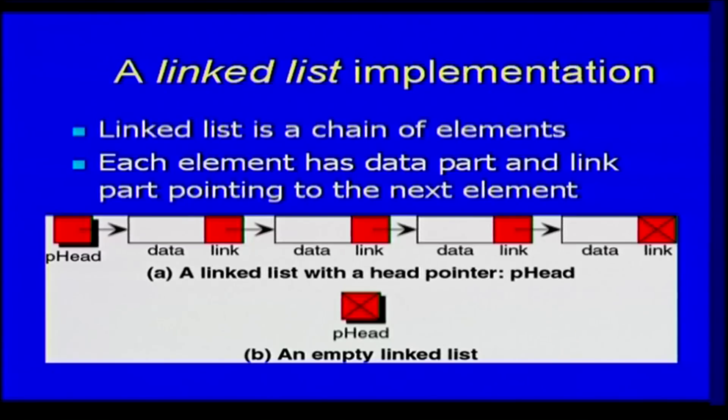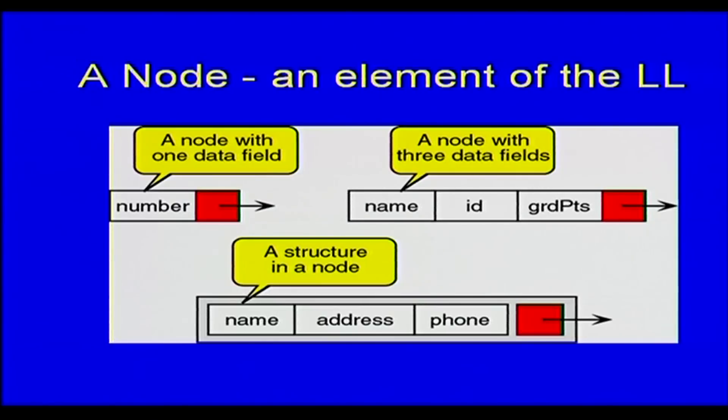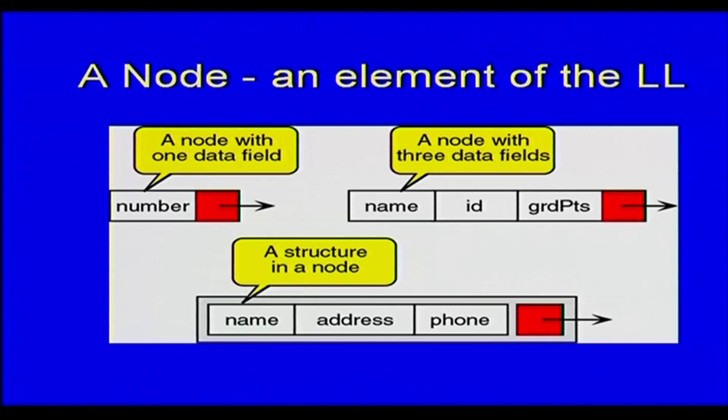A linked list can be represented using a pointer to the head of the list — the first element. If you have an empty linked list, this head pointer will have a null value. A node can have just one data field, or it can have multiple data fields such as name, id, and grade points, and it always has a link field. There are many ways in which linked lists can be represented. In the one we are going to look at, we define the linked list using two structures: a head structure and a data node structure.